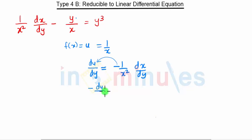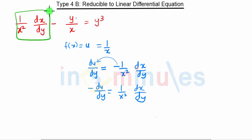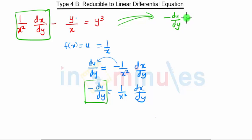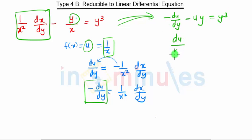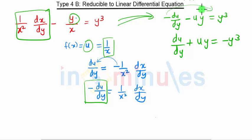Taking the minus sign over, we get −du/dy = (1/x²)·(dx/dy). We can replace that term in our equation: −du/dy − u·y = y³. Taking the minus sign common gives du/dy + u·y = −y³. This equation is nothing but a linear equation in u.